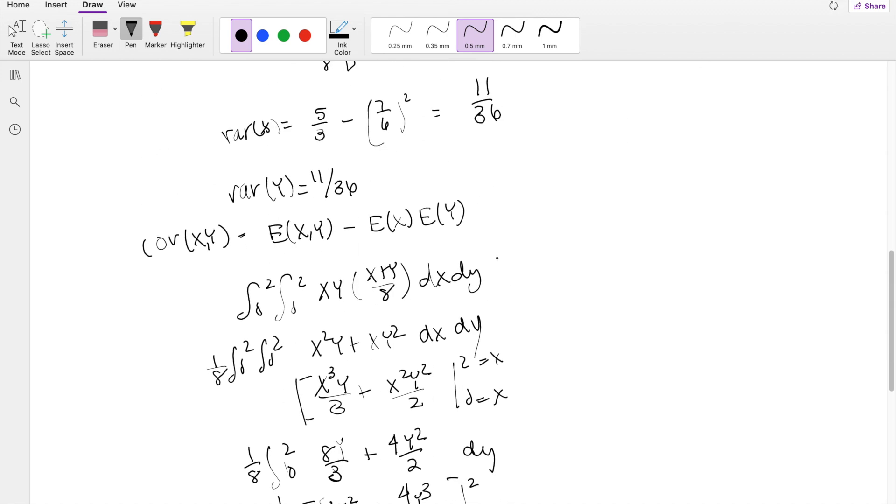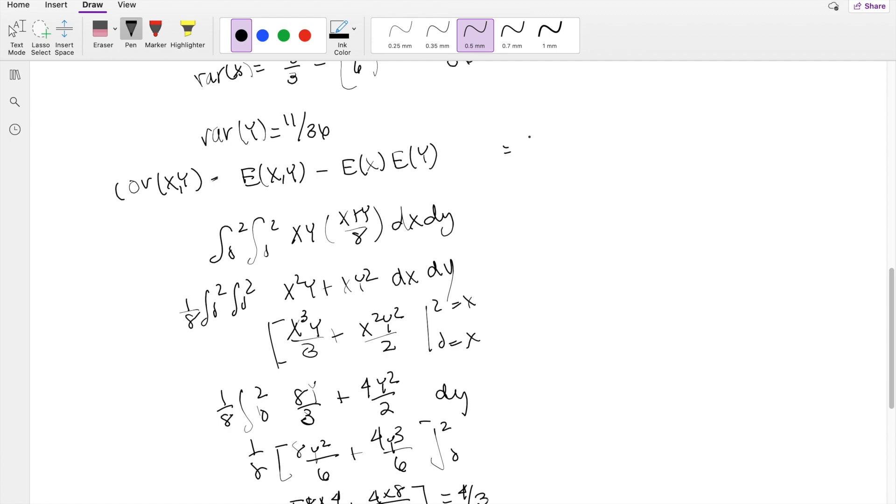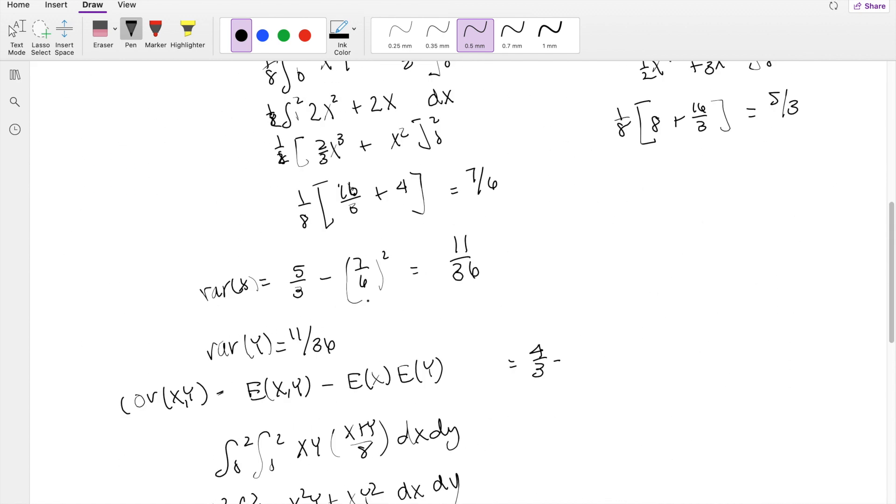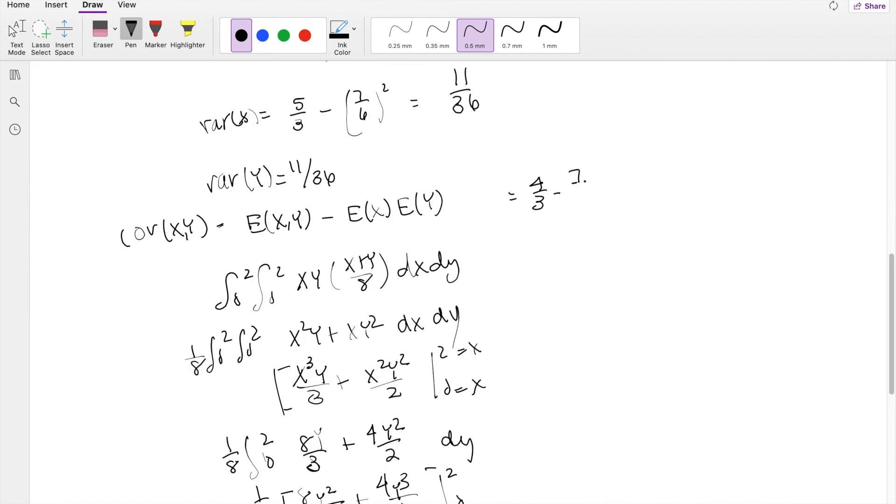So the covariance equals 4/3 minus the expectation of x, which is 7/6, times the expectation of y, which is also 7/6 because of symmetry. This equals negative 1/36.